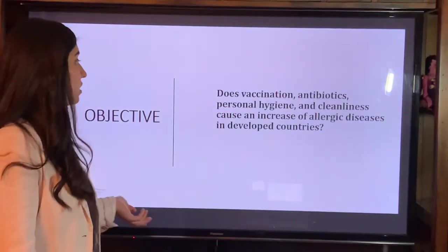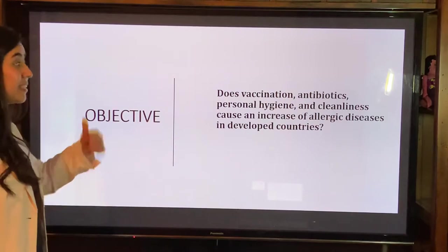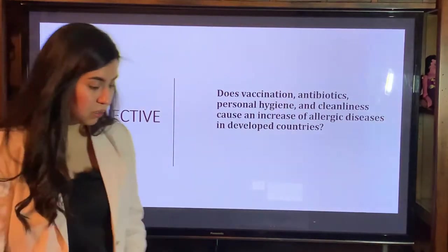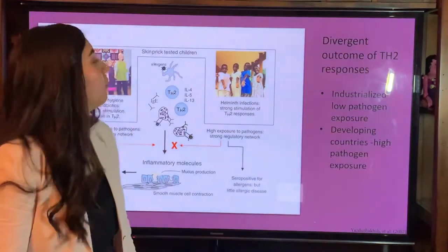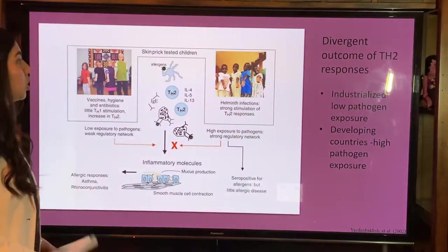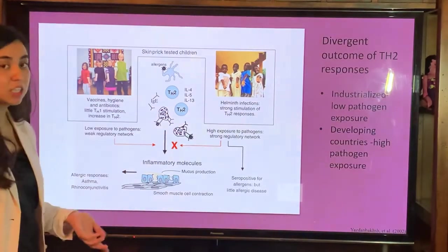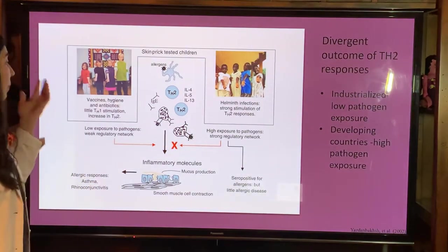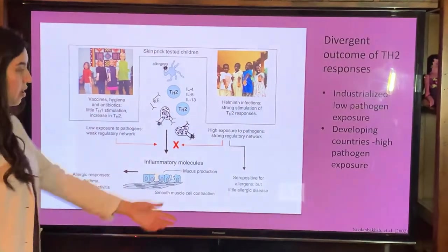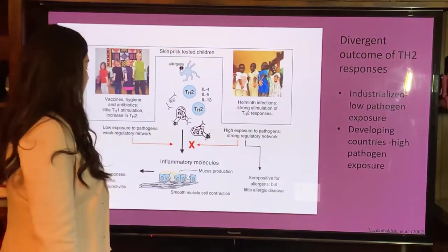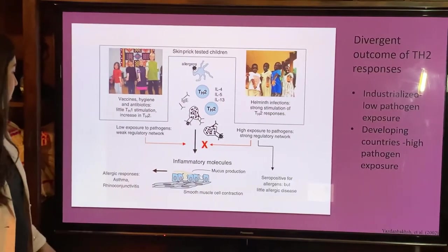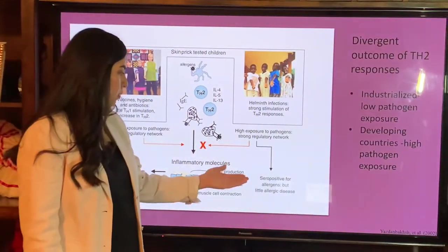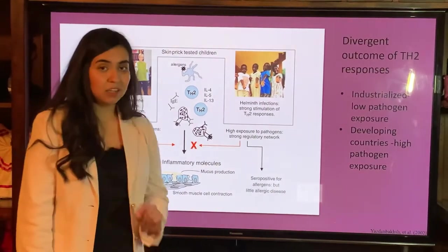The objective of this presentation is to see if vaccinations, antibiotics, personal hygiene, and cleanliness cause an increase of allergic disease in developed countries. Our first study was a skin prick test on children. Industrialized countries have low pathogenic exposure and developing countries have high pathogenic exposure. On the low pathogenic exposure side we have a weak regulatory network, resulting in increased allergic responses such as asthma and rhinoconjunctivitis. On the high pathogenic exposure side we have a strong regulatory network, zero positive allergies, and very little allergic disease.